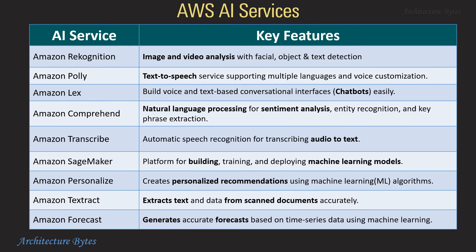Amazon AI services: Amazon Rekognition is used for image and video analysis. Amazon Polly provides text-to-speech conversion. Lex is for creating chatbots. Comprehend has natural language processing capabilities and can be used for sentiment analysis or key phrase extraction from text. Amazon Transcribe provides audio-to-text conversion.